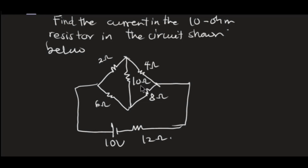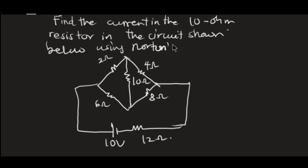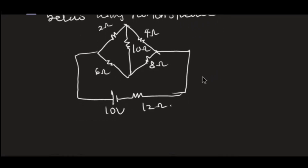Hello viewers, welcome back to another section of my YouTube channel tutorial. In this video I'm going to take you through bridge circuits in Norton's theorem — how we solve Norton's theorem on a bridge circuit. I have a nice problem here for us to tackle: find the current in the 10 ohm resistor in the circuit shown below using Norton's theorem.